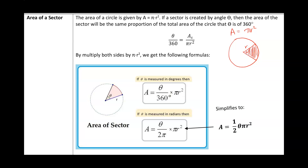Theta will be the same proportion of 360 as the area created by that sector will be to the entire area of the circle, which is pi r squared. So we get the formula theta over 360 equals the area of the sector over pi r squared. Multiplying both sides by pi r squared, the area of the sector is theta over 360 times pi r squared — this formula applies when theta is measured in degrees.